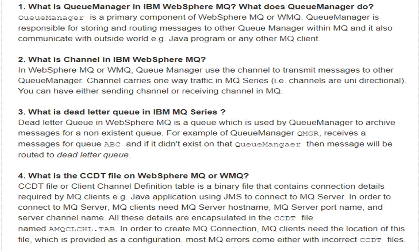What is a CCDT file in WebSphere MQ? The CCDT file, or Client Channel Definition Table, is a binary file that contains connection details required by MQ clients — such as a Java application using JMS — to connect to an MQ server. To connect to an MQ server, MQ clients need the MQ server host name, MQ server port, and server channel name. All these details are encapsulated in the CCDT file.